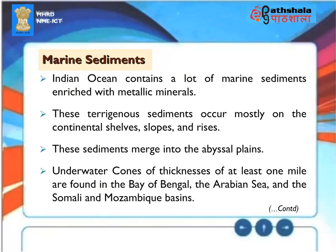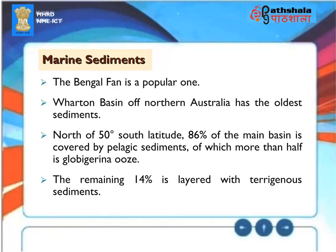Marine Sediments. The Indian Ocean contains a lot of marine sediments enriched with metallic minerals. Terrigenous sediments occur mostly on the continental shelves, slopes and rises, merging into the abyssal plains. Underwater sediment cones of at least one mile thickness are found in the Bay of Bengal, the Arabian Sea and the Somali and Mozambique basins. The Bengal Fan is a notable one. The Wharton Basin of northern Australia has the oldest sediments. North of 50 degrees south latitude, 86% of the main basin is covered by pelagic sediments, of which more than half is Globigerina ooze. The remaining 14% is layered with terrigenous sediments.